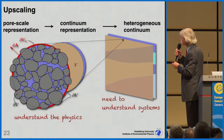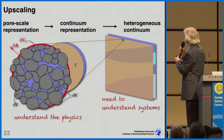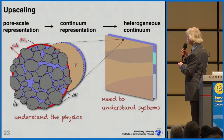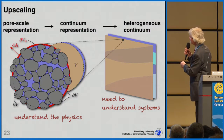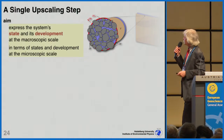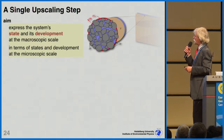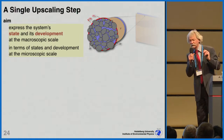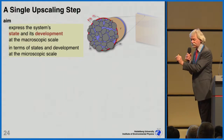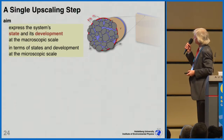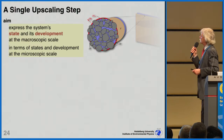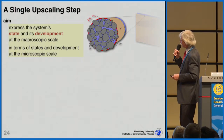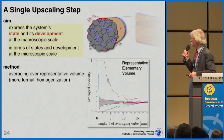We are interested in upscaling, in this example from the pore scale to a continuum representation, all the way to a heterogeneous continuum. We understand the physics at the pore scale, but we are interested in understanding systems at a much larger scale. The aim of upscaling is to express a system's state and its development — not just the state or material properties, but also its governing equations — at the macroscopic scale in terms of states and development at the microscopic scale.